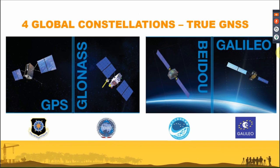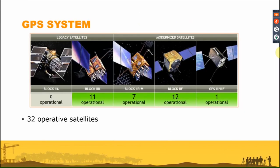Talking about GPS: in 1978 the first satellites were launched, and it became fully operational for civil use since 1994. It is currently made up of 32 operative satellites and supplies multiple frequencies including L1, L2, L2C, and L5. The GPS constellation is a mix of old and new satellites, with older ones continuing to work even if their expected lifespan has ended.